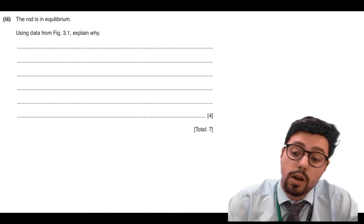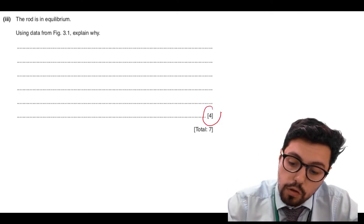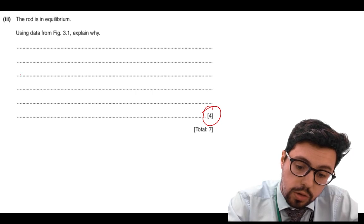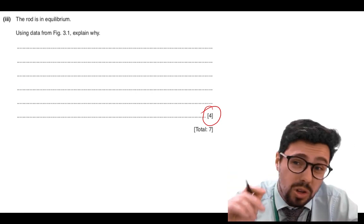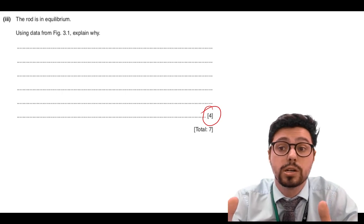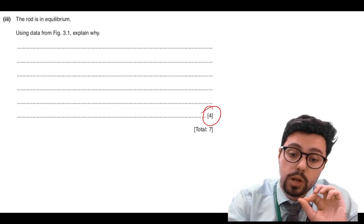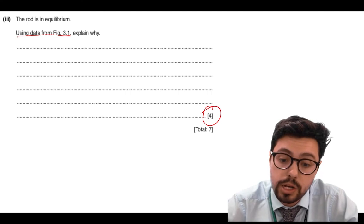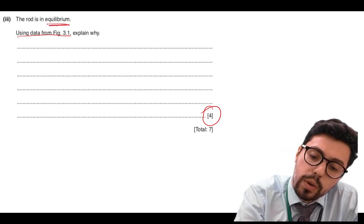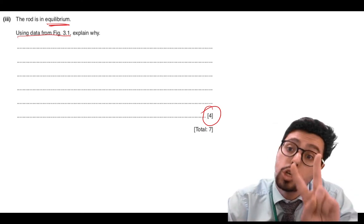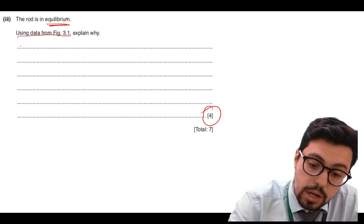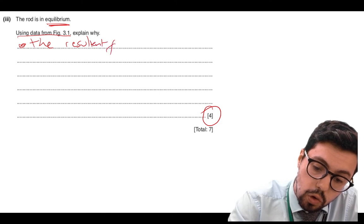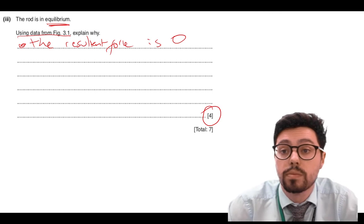Final part: this is four marks. I'm going to need four points. The rod is in equilibrium — using data, explain why. They want numbers in the explanation. There are two conditions for equilibrium: first, the resultant force on an object is zero; second, the sum of the anticlockwise moments equals the sum of the clockwise moments. The resultant force being zero means it's not moving up, down, left, or right. The sum of moments equalling each other means it's not spinning.